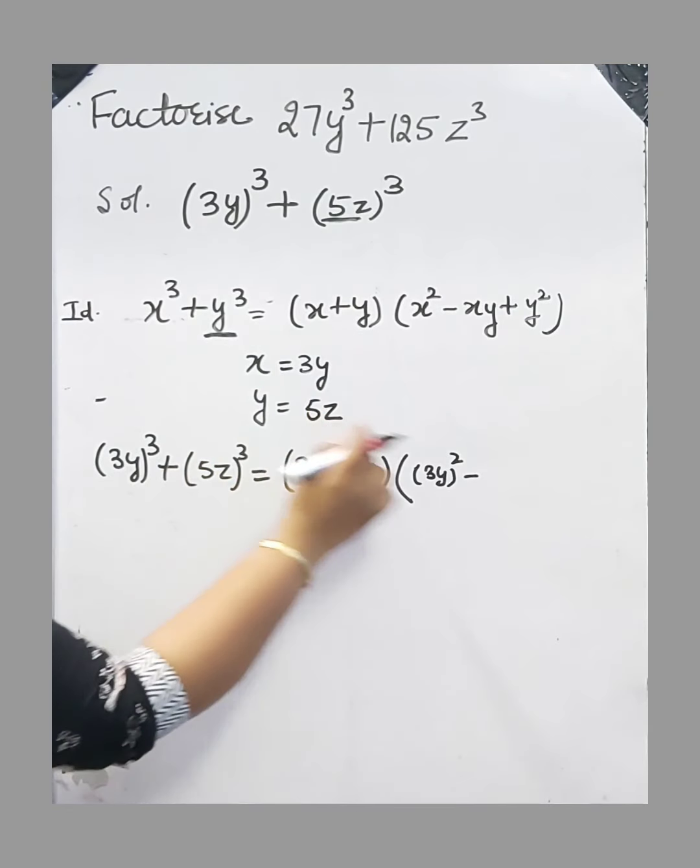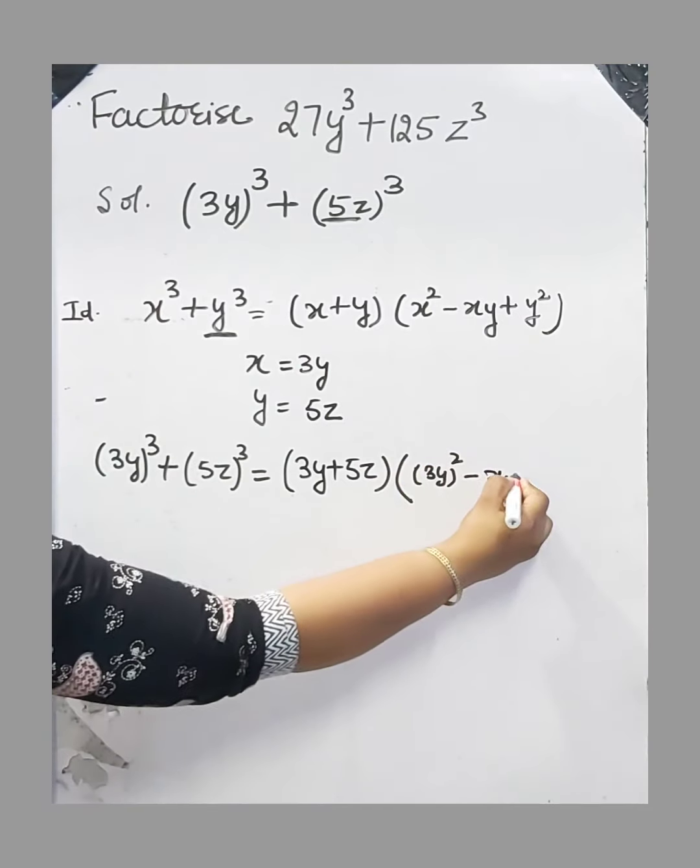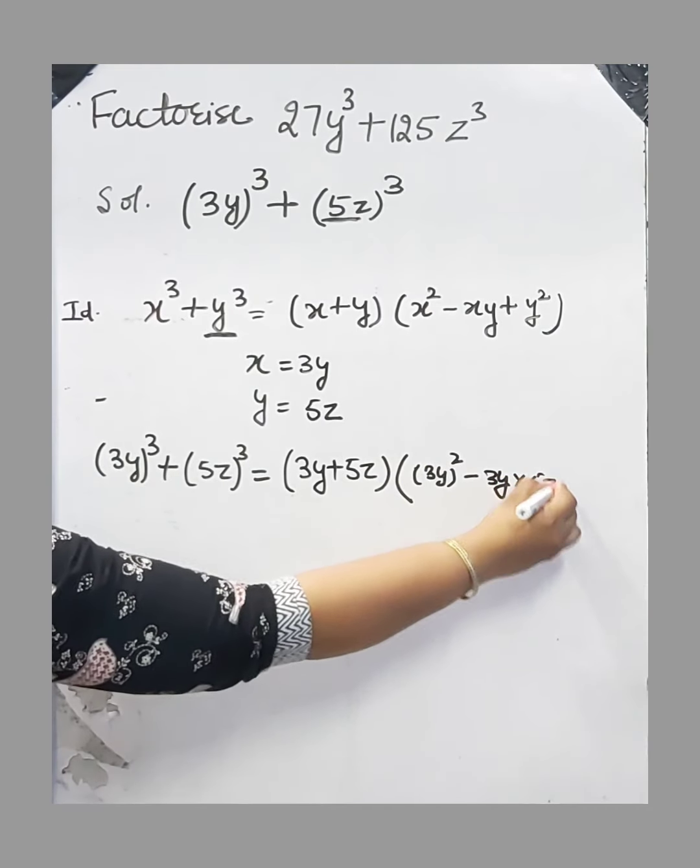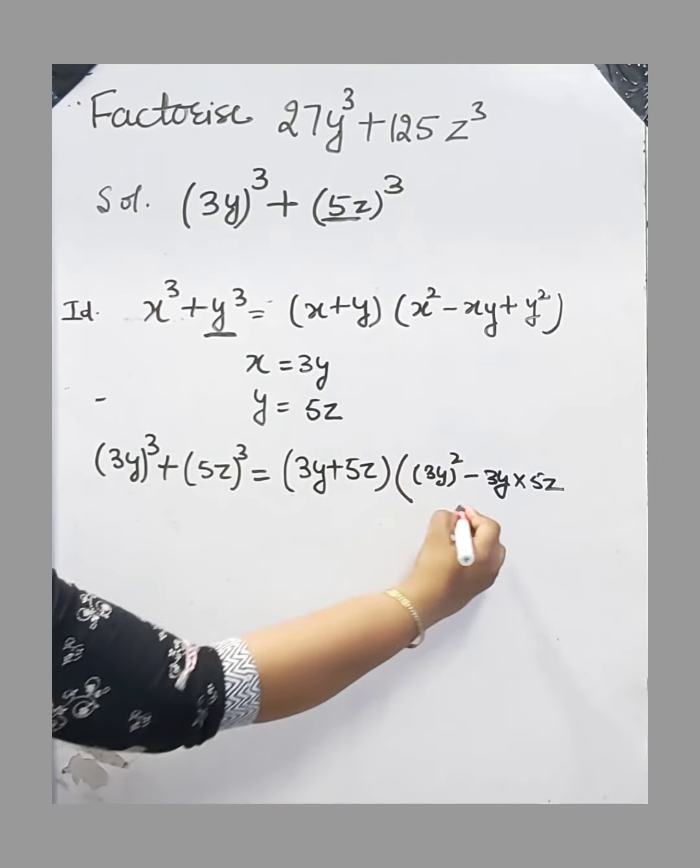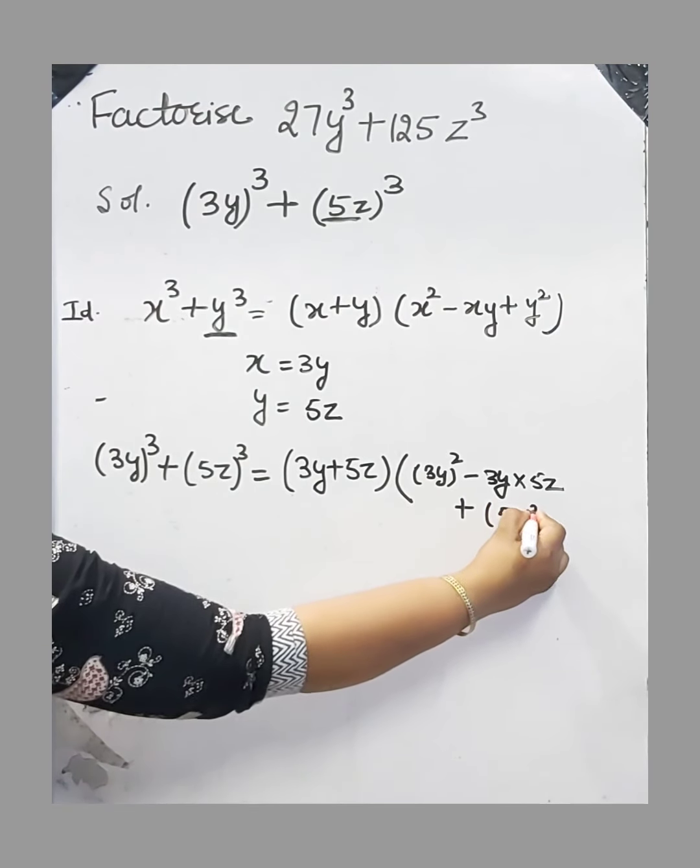x is 3y, y is 5z, so we have to write 3y times 5z. Plus y², which means (5z)².